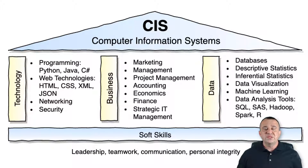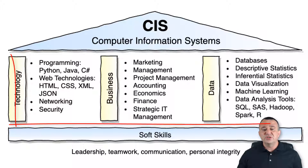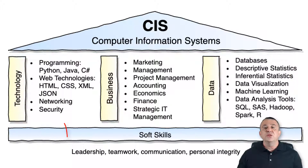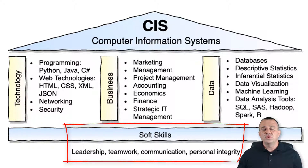Computer information systems, or CIS, as a field, as a major, as a profession, relies on the following three areas of knowledge: technology, business, and data. Those three pillars of knowledge also stand on the foundation comprised of such soft skills as leadership, teamwork, communication, and personal integrity.